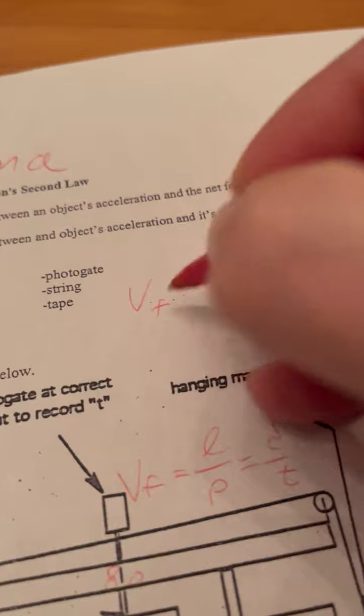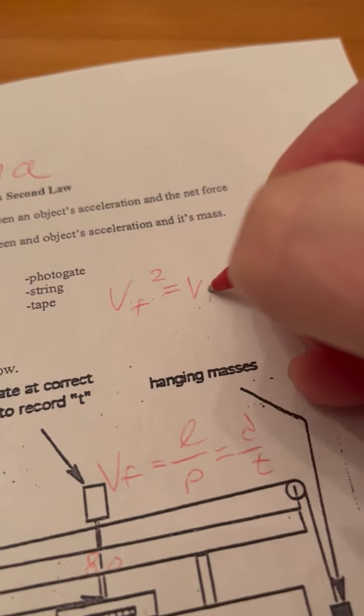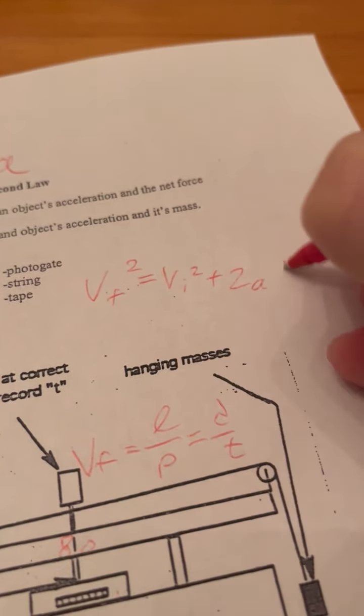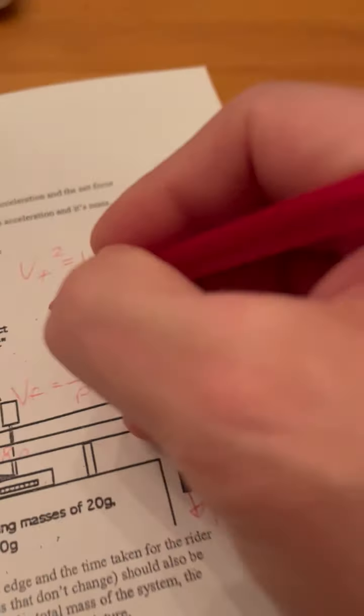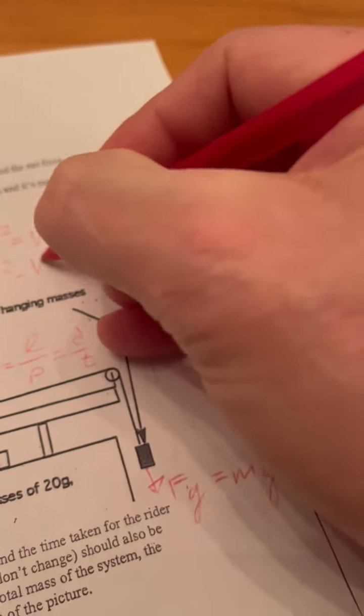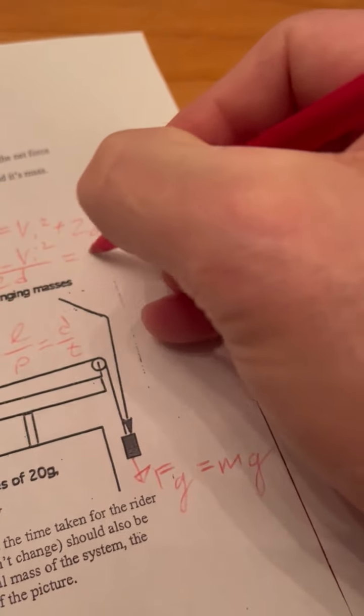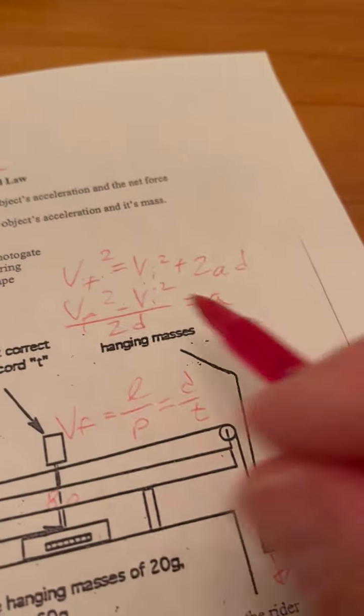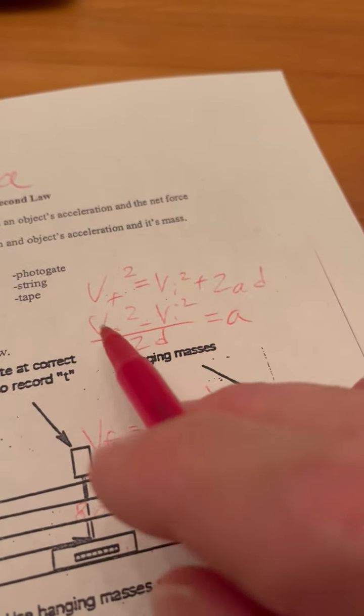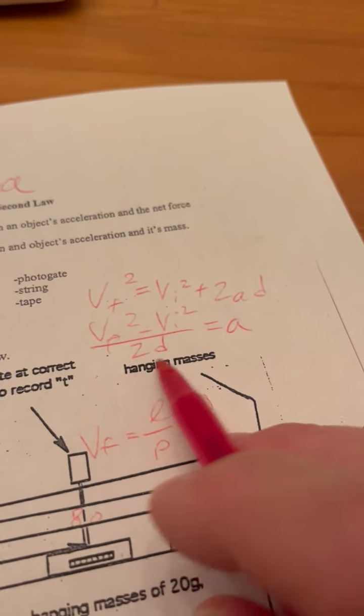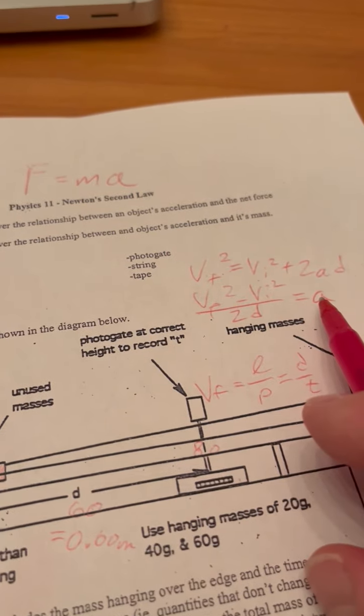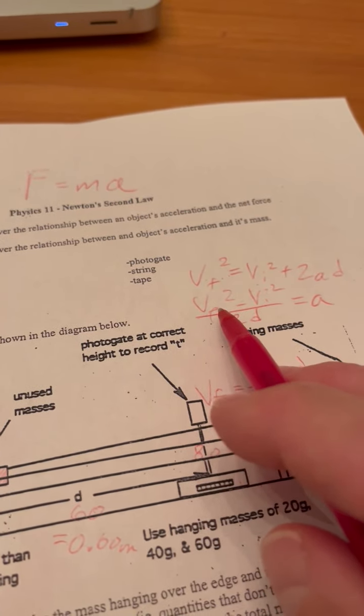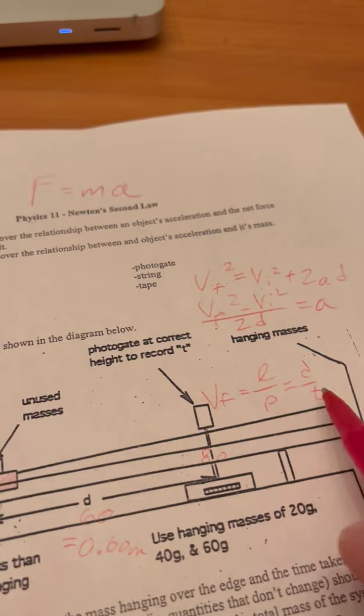When we calculate our acceleration, we're going to use VF squared equals VI squared plus 2AD. And we're going to solve for the A, which is going to be VF squared minus VI squared all over 2D. And so in this case, our VI is 0. So we just have to square our VF and divide it by twice the distance, and that's this distance. And that will give us our acceleration. But this VF, we have to get by doing the card divided by the time.